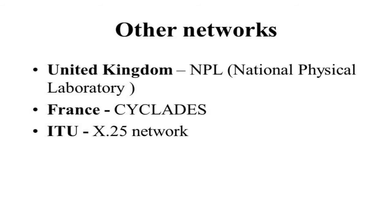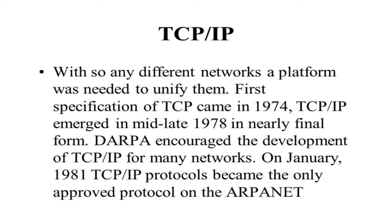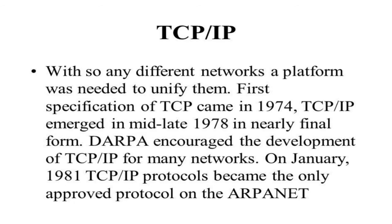A problem then emerged: how could people in different networks communicate with each other? Until then, if you were part of ARPANET and another person was part of the X.25 network, they could not communicate because all networks were standalone. When this problem emerged, TCP/IP came in — Transmission Control Protocol / Internet Protocol — and the purpose was to create a platform to unify all these different networks.